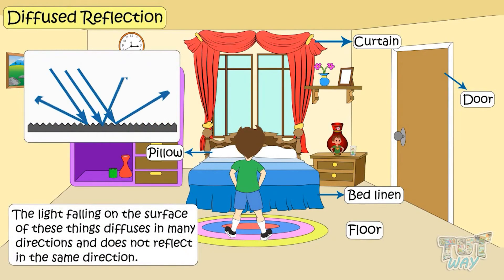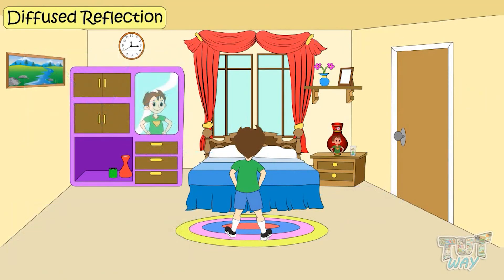That is, the light falling on these things diffuses in many directions and does not reflect in the same direction. And that is why you are not able to see your image in every object in the room, but only in very smooth surfaces.